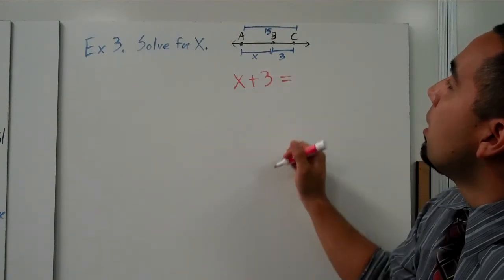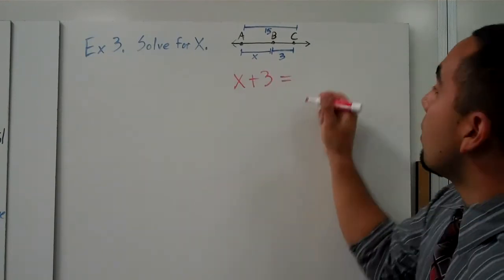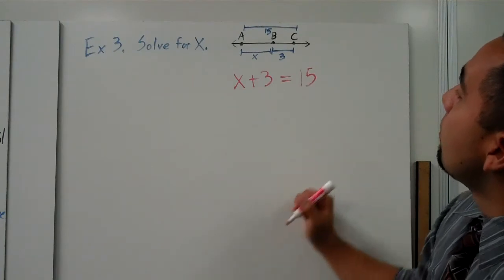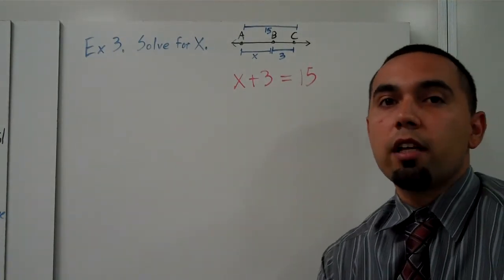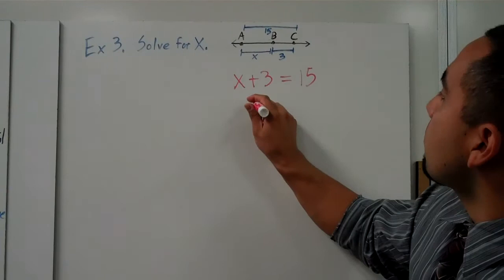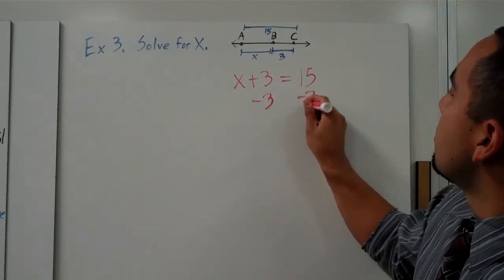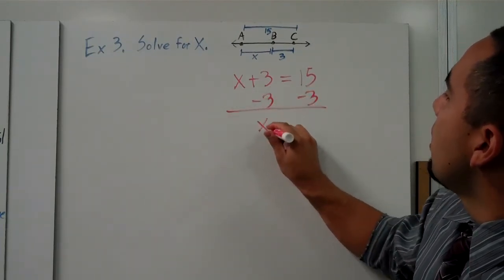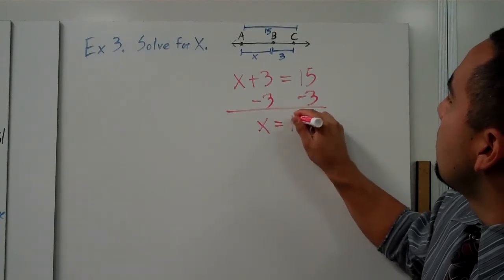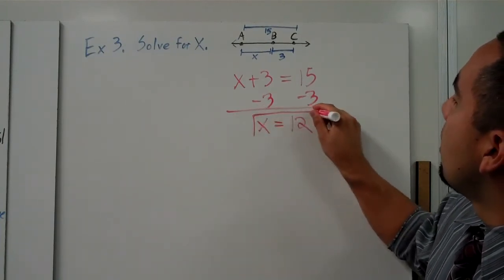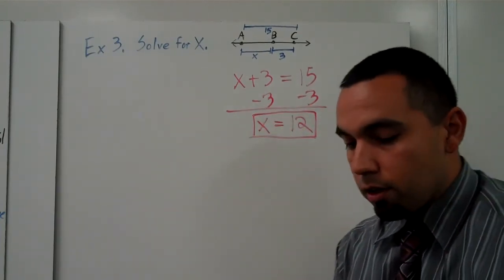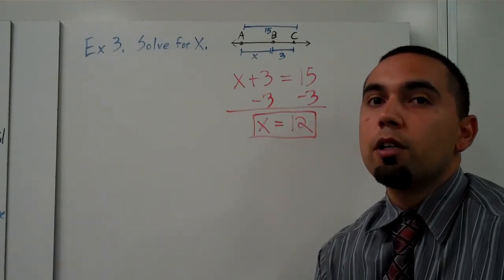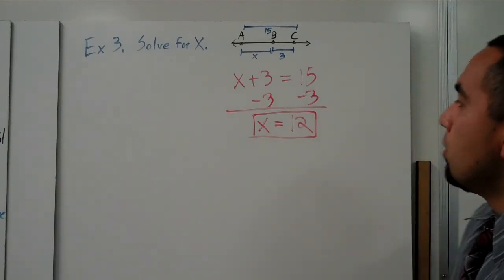So X plus 3 equals 15, and again, real easy algebra problem. Just going to subtract 3 from both sides, and we solve for X, and we are done. Okay, so that was segments and congruence.